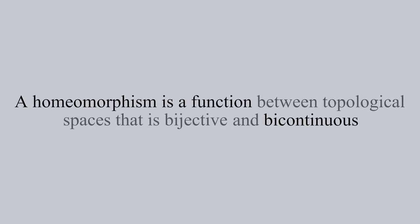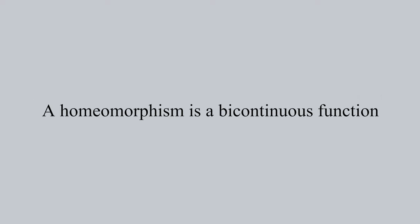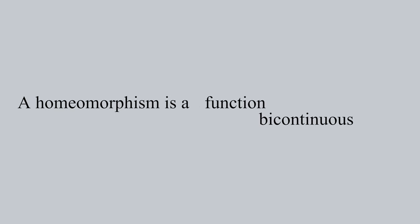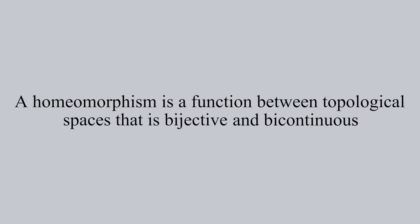Continuity in both directions can be simplified to the function being bicontinuous. Some people may even say that a homeomorphism is simply a bicontinuous function because continuous functions are always between spaces with topologies and the existence of an inverse function implies bijectivity. This definition is a lot to talk about, but I'll first start off with what it means to be a topological space.